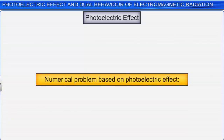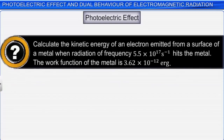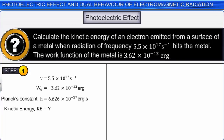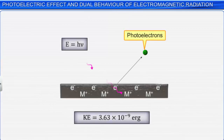Let us solve a numerical problem based on the photoelectric effect. Calculate the kinetic energy of an electron emitted from a metal surface when radiation of frequency 5.5 × 10¹⁷ per second hits the metal. The work function of the metal is 3.62 × 10⁻¹² ergs. Using the equation KE = hν − W₀, substituting the values of hν and W₀, we get the final answer as 3.63 × 10⁻⁹ ergs. Hence, the electron will be emitted with a kinetic energy of 3.63 × 10⁻⁹ ergs.